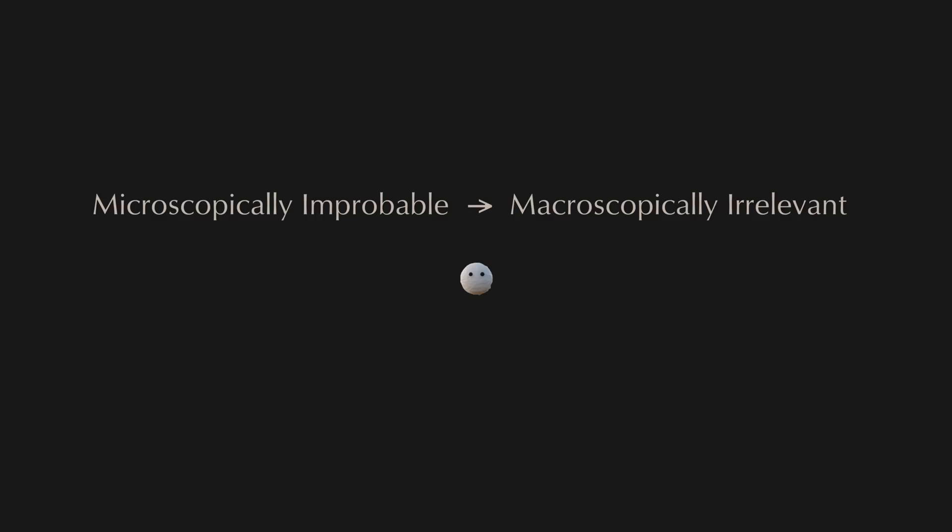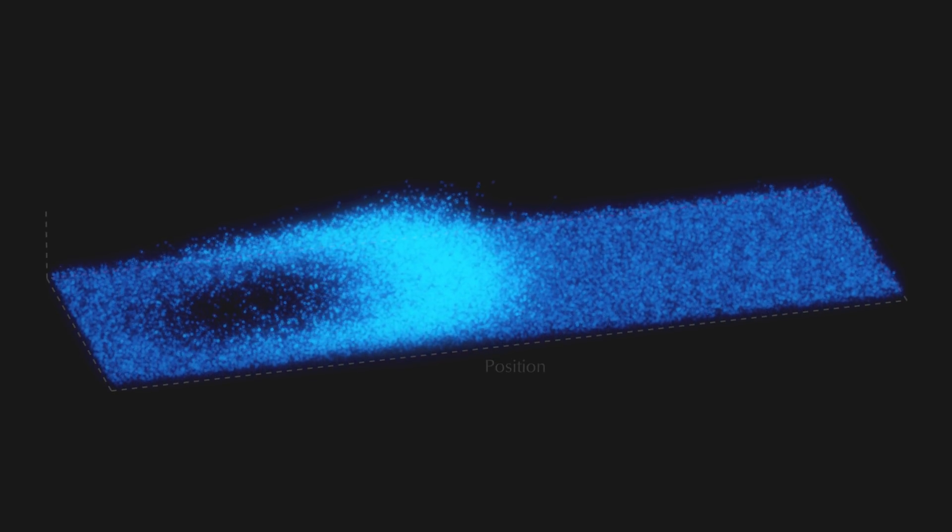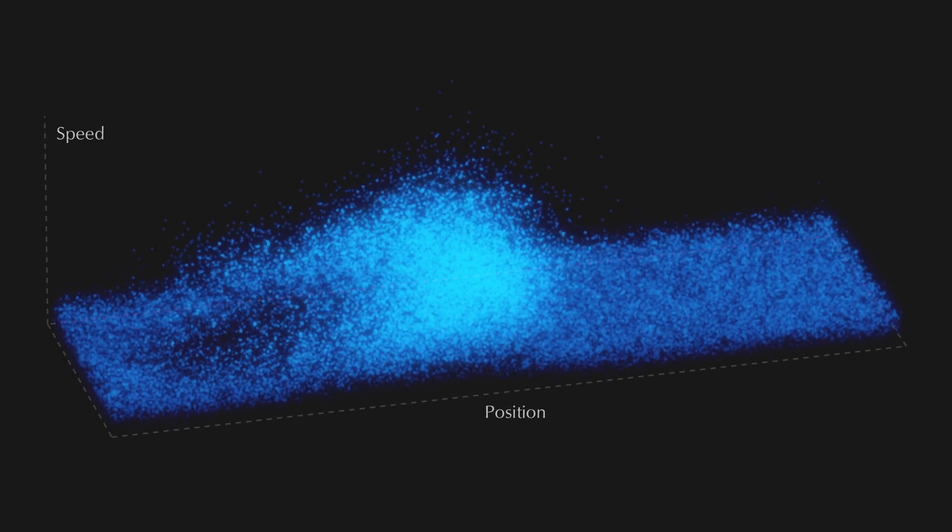And one way to approach this is by superimposing a virtual abundance of independent macroscopically equivalent simulations, leading to a statistical perspective on the molecular mechanics. And with the particles living in the space of position and velocity components, here shown as speed,